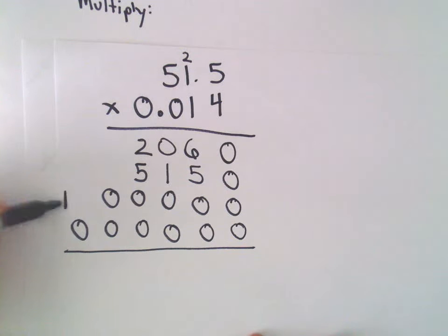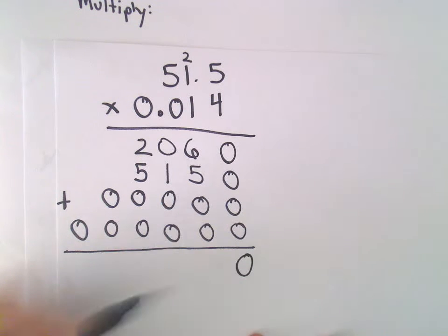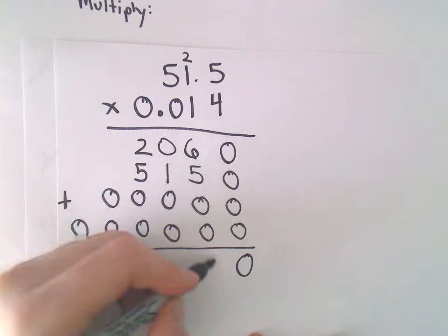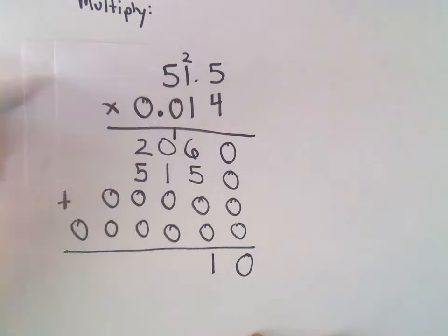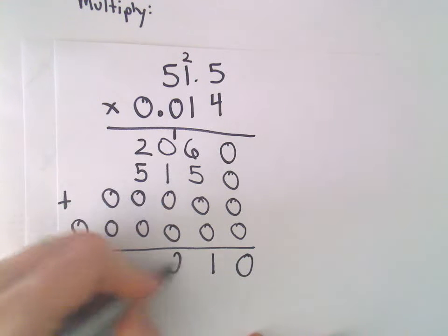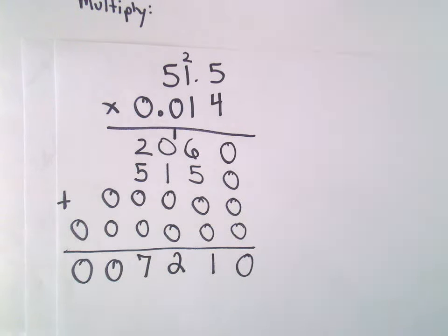Now we're going to add all this stuff together. The first column, we'll just get 0. 6 plus 5 is 11, so we'll keep the 1 and carry the 1. 1 plus 1 is 2, 2 plus 5 is 7. And then we were left with a couple 0s.